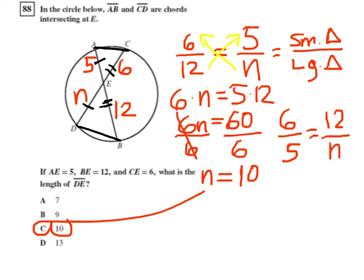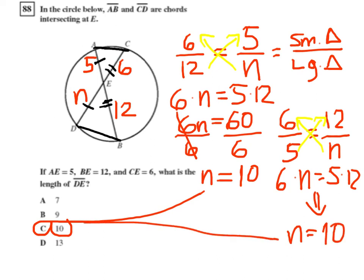5 times 12, which eventually leads to N equals 10. Again, answer C.